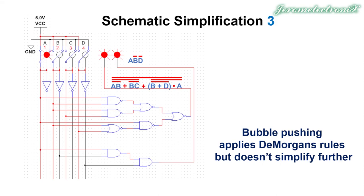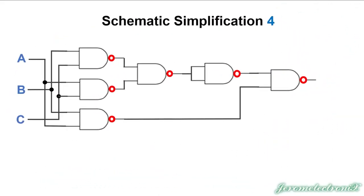Bubble pushing applies DeMorgan's rules but doesn't simplify further. Here's another simplification example — example four. I'd like to challenge students to try this before I show you. I'm going to pull the equations out and build them into an equation. Here I'm multiplying B times C and NOTting it because of the NOT bubble on the output. For the next term, I'm multiplying A and C and putting a line over those. The last one is B and A, also inverted with a line.